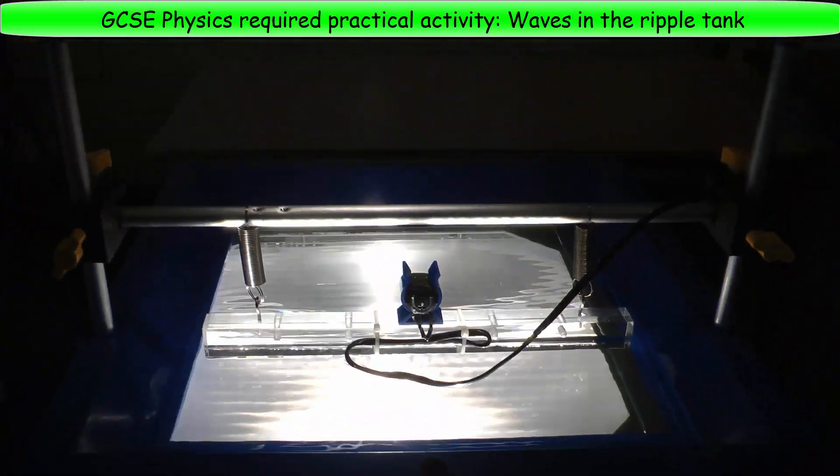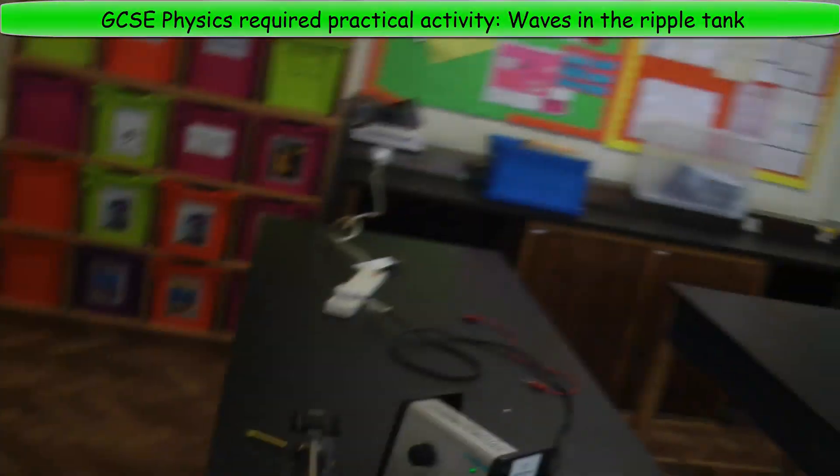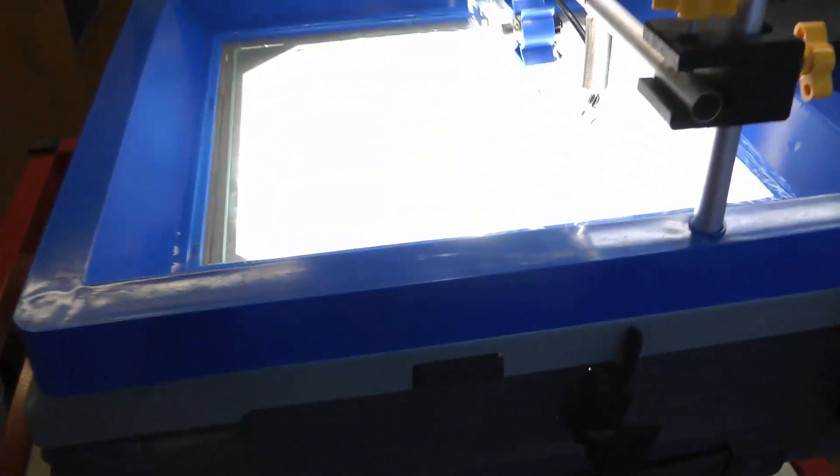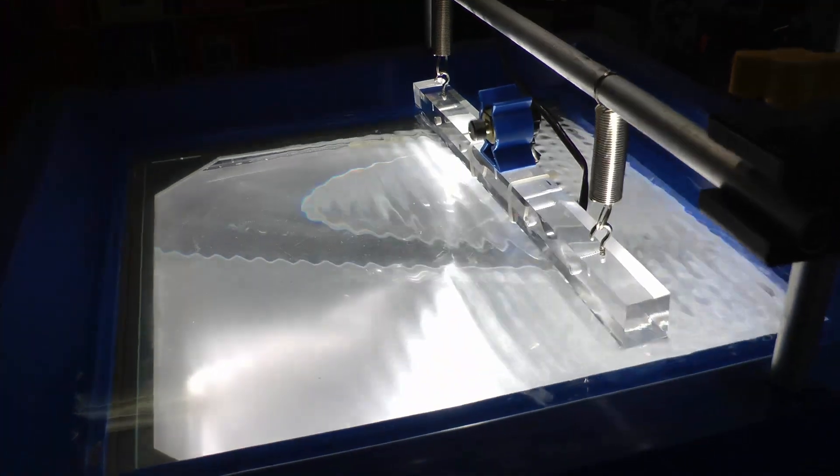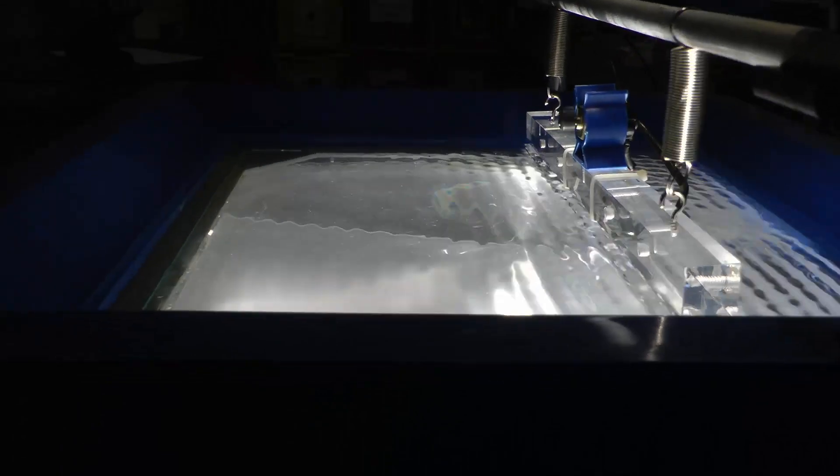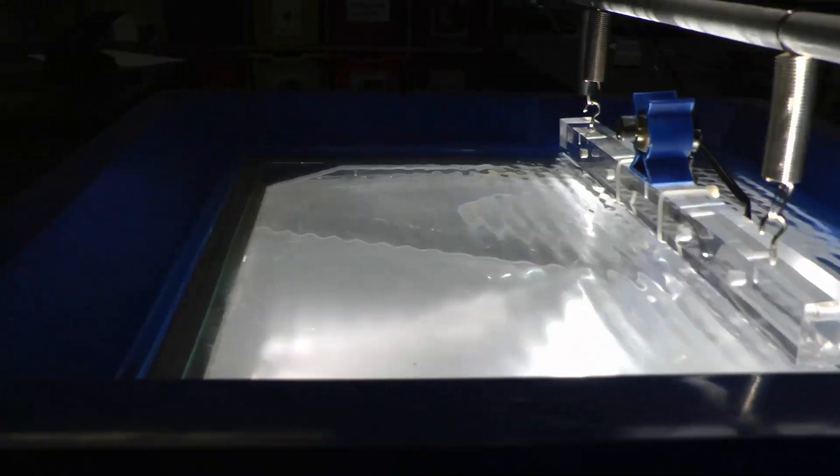Okay, so this is the GCSE required practical on waves in a ripple tank. We're looking at a close-up of a ripple tank. You can see the central beam bouncing up and down, spreading plane waves across the surface of the water.